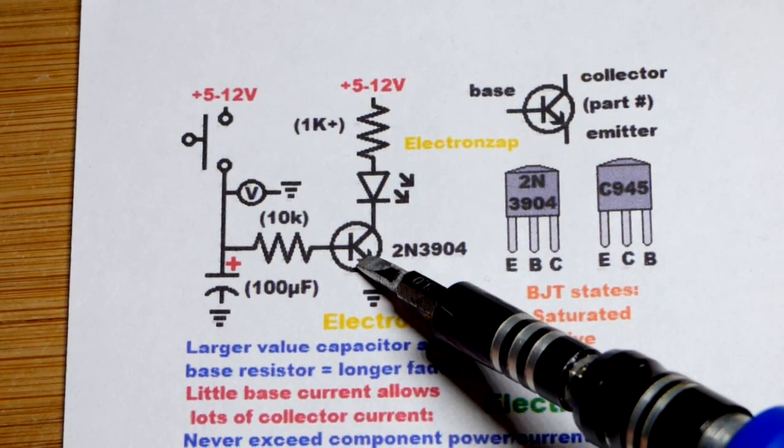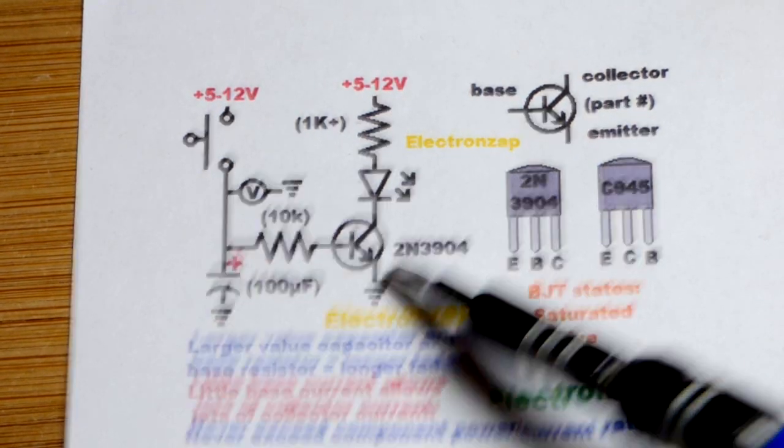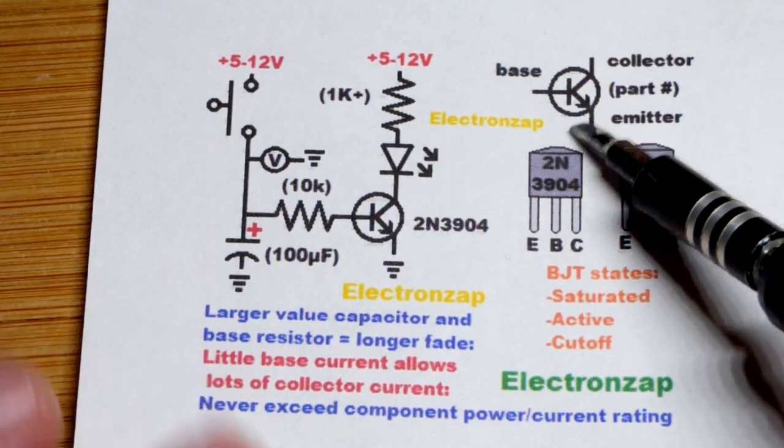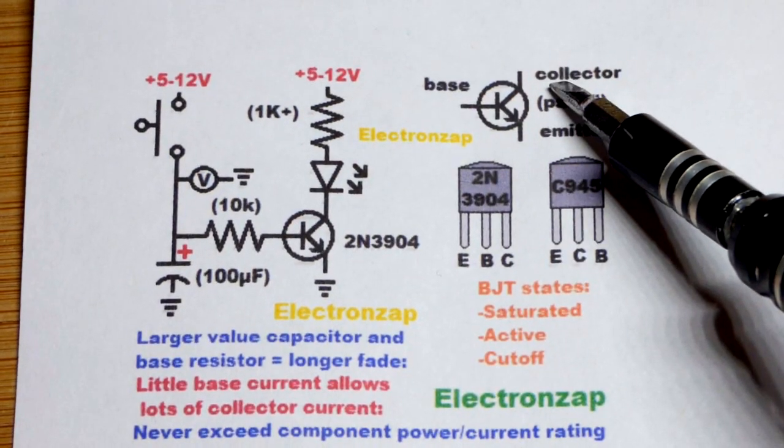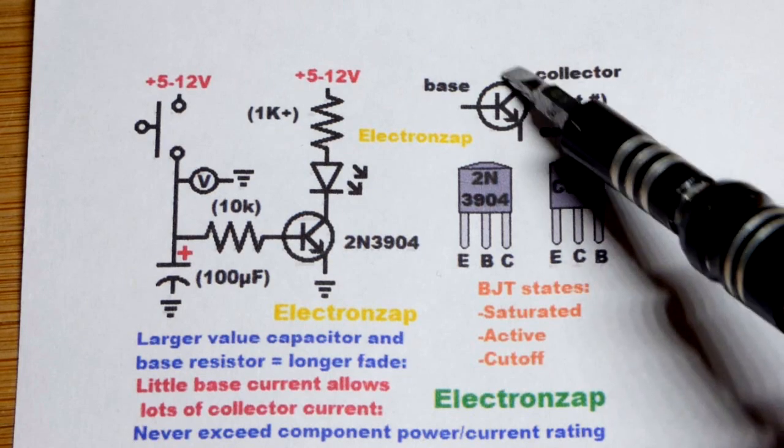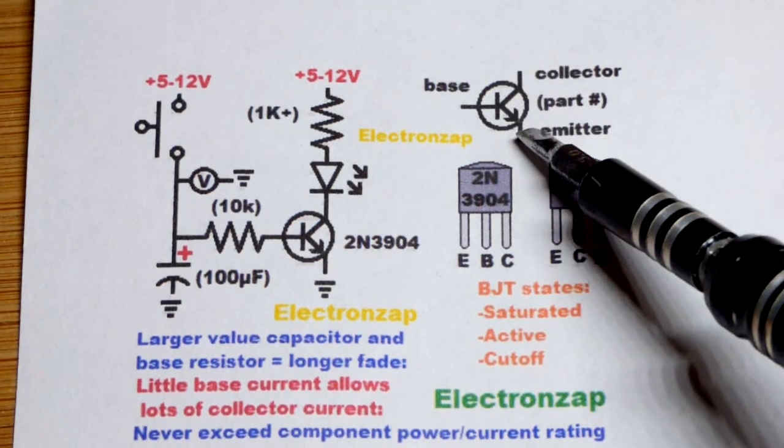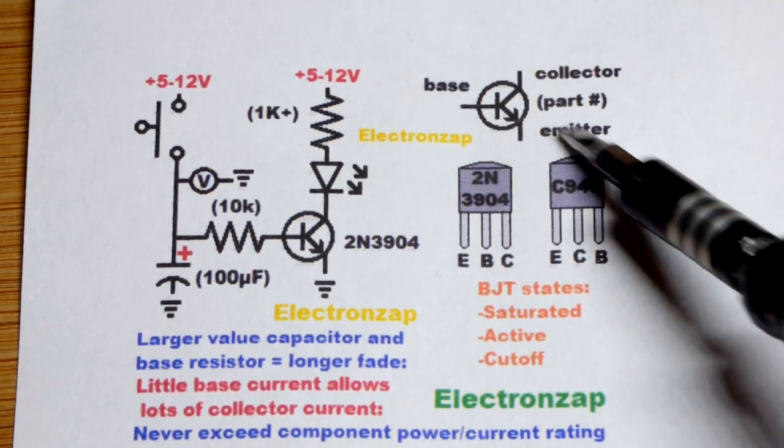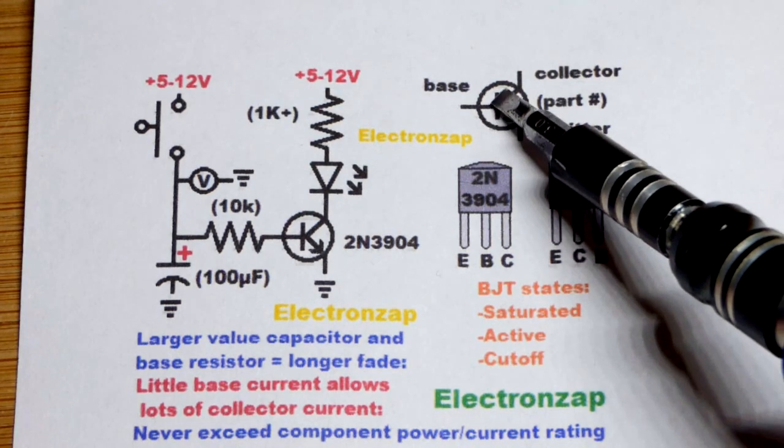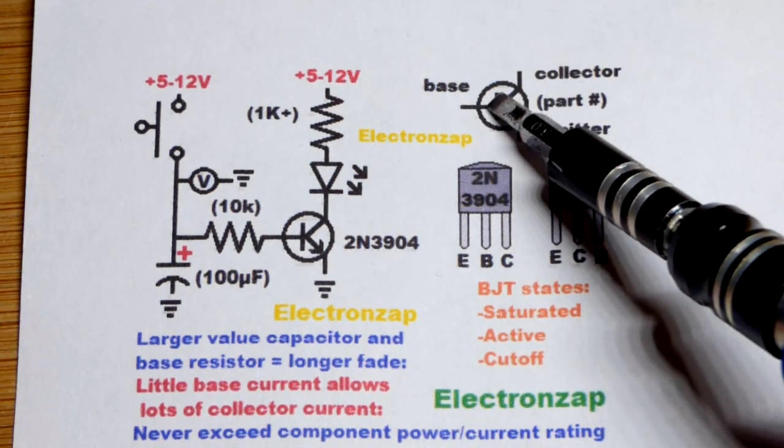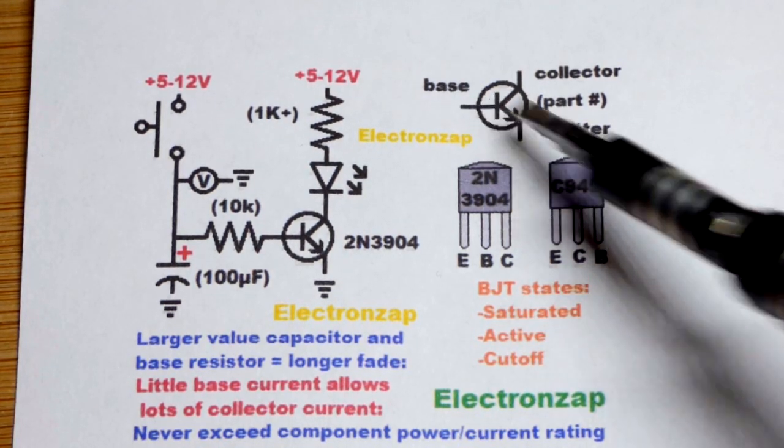So we have the NPN bipolar junction transistor, the heart of the circuit. There's the schematic symbol right there, and there is the pin layout. So collector is this line right there without the arrow, then we got the arrow down here, the emitter. They're separated to the base by a bar, and so the base is on its own side right there.